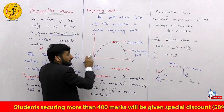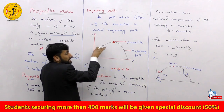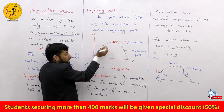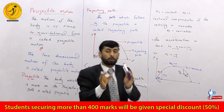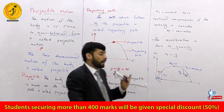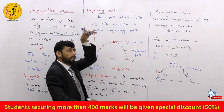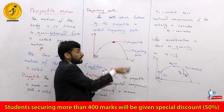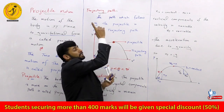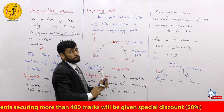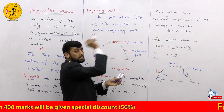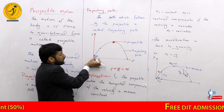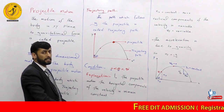The projectile motion has an angle of projection. The angle theta is greater than 0 and less than 90 degrees. That means if the angle of the projectile is reduced, it is less than 90 degrees. The main point is that theta is greater than 0 and less than 90 degrees.